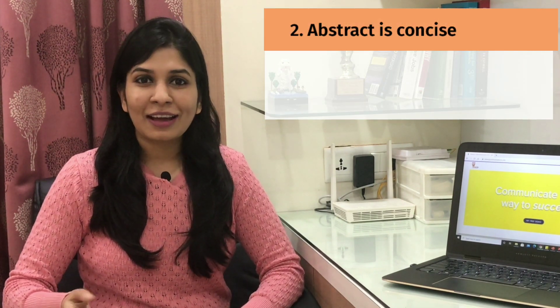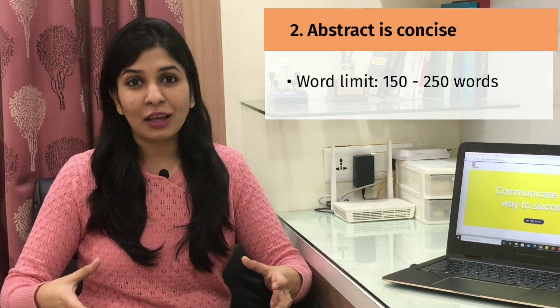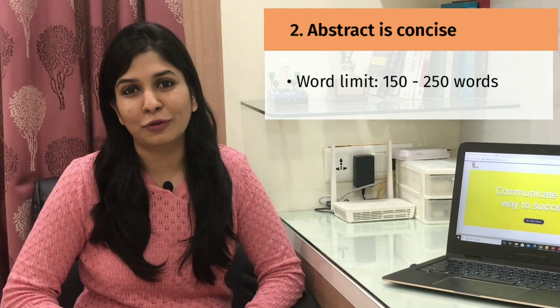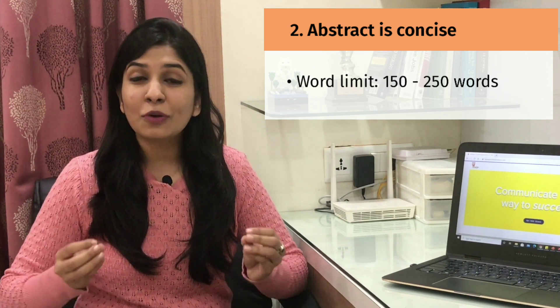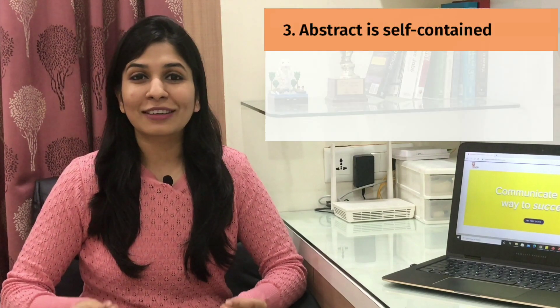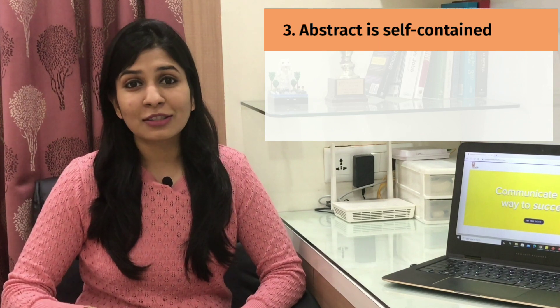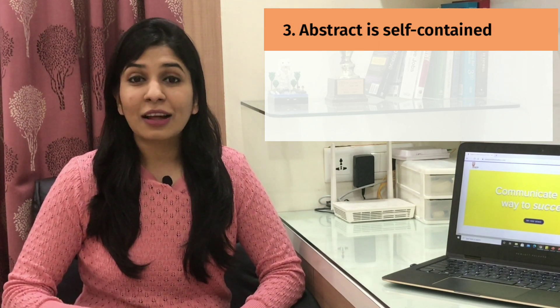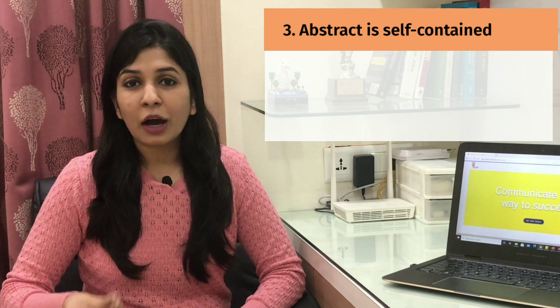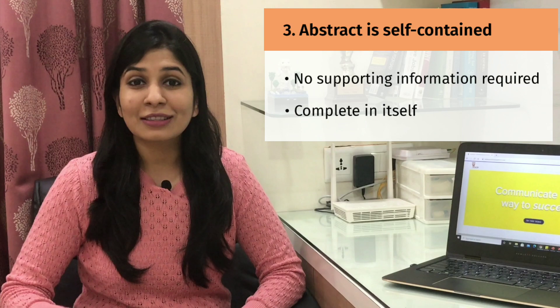The second feature is that an abstract is concise, which means it is to the point. It doesn't consist of any unnecessary information because the word limit for an abstract is between 150 to 250 words. So you need to include all the key information from all the sections, but in a limited number of words only. The third feature is that an abstract is self-contained, meaning that even though it consists of a limited number of words, you can understand the complete meaning without requiring any supporting or extra information. An abstract is complete in itself.